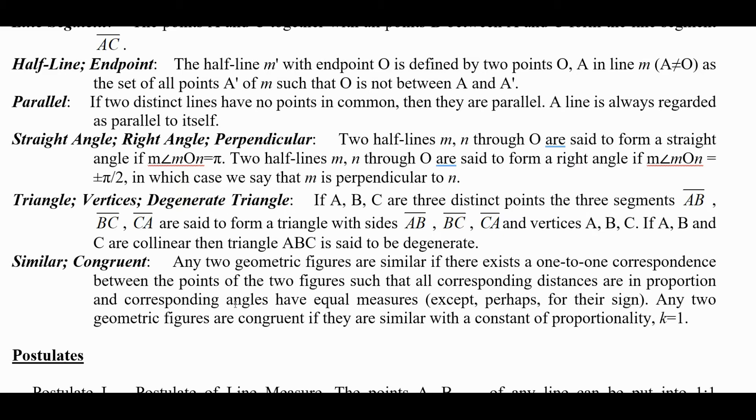Similar and congruent: any two geometric figures are similar if there exists a one-to-one correspondence between the points of the figure such that all corresponding distances are in proportion and corresponding angles have equal measure except perhaps for their sign. Any two geometric figures are congruent if they are similar with the constant of proportionality k equals one.